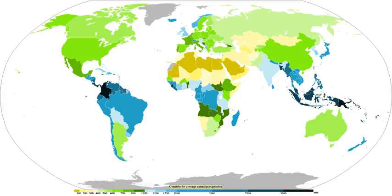The Köppen classification depends on average monthly values of temperature and precipitation. The most commonly used form has five primary types labeled A through E: A, tropical; B, dry; C, mild mid-latitude; D, cold mid-latitude; and E, polar. The five primary classifications can be further divided into secondary classifications such as rain forest, monsoon, tropical savanna, humid subtropical, humid continental, oceanic climate, Mediterranean climate, steppe, subarctic climate, tundra, polar ice cap, and desert.